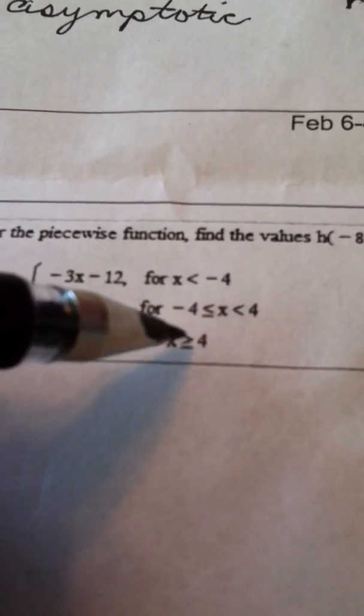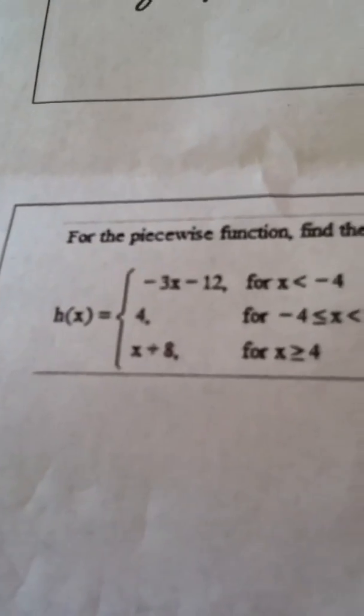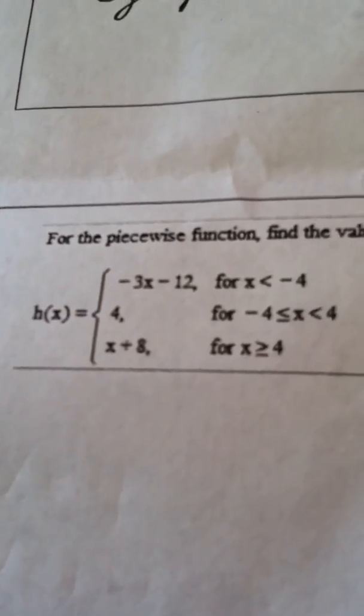And for any number greater than or equal to 4, this is what you use. So what you really determine in a piecewise function is which part you're using.